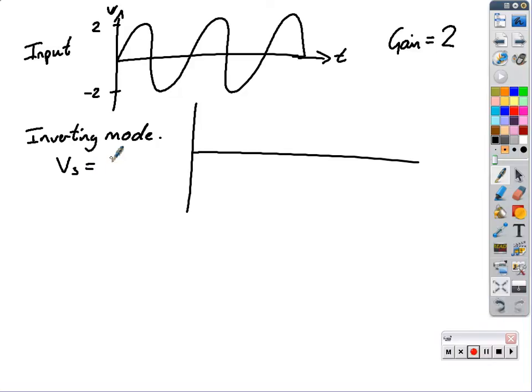So Vs is equal to 10, so plus and minus 10, we are giving our op-amp a voltage supply of plus 10 and minus 10. If we did that, the gain was 2, it's an inverting op-amp, it will change it to opposite sign.